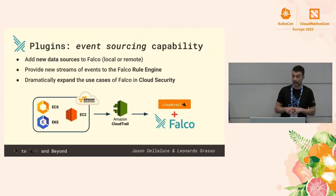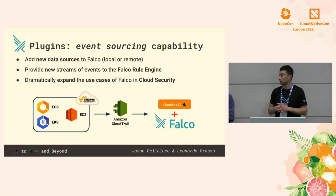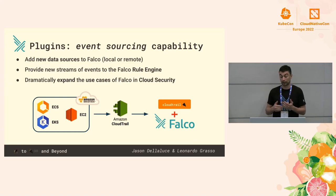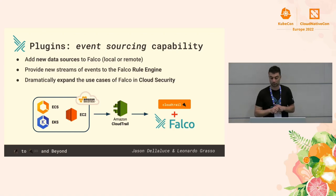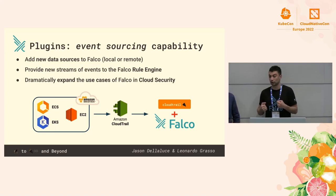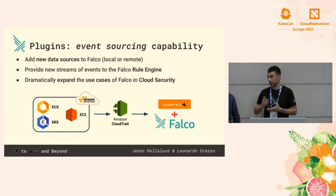One thing a plugin can do is provide a new event source to Falco. Falco historically only supported system events coming from the kernel, and later added support for Kubernetes audit log. The next logical step was for the plugin system to standardize this and create a unified, coherent way for people to develop new event sources for Falco. Events coming from new sources are processed by the Falco engine just like system events, and can then be matched against security rules.